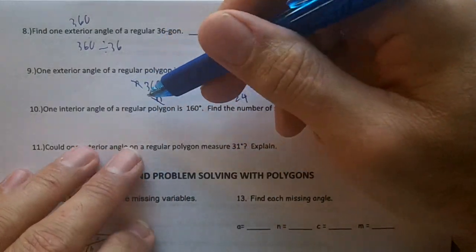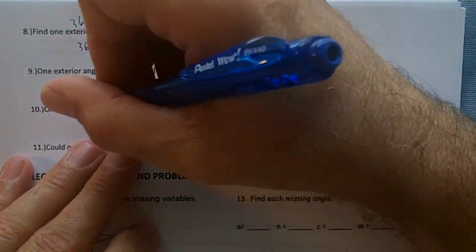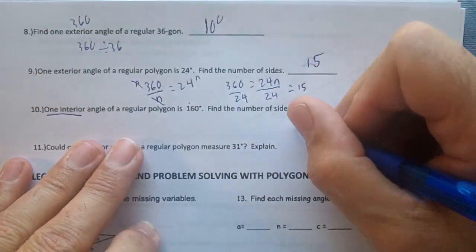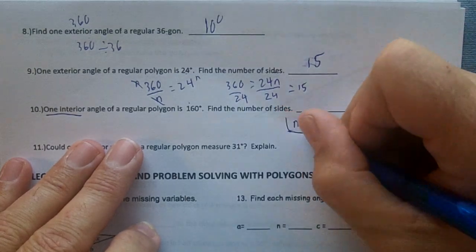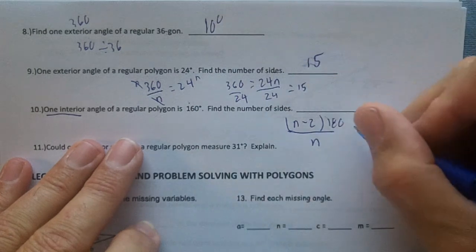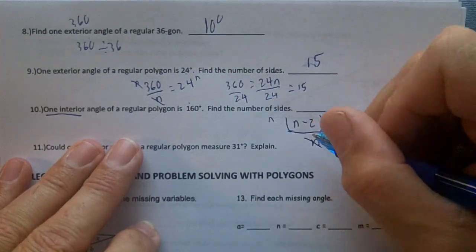One interior angle is 160. Find the number of sides. It's a little bit tricky. So we know one interior angle. To get one interior angle, we use this formula and we know it's equal to 160. I need to multiply both sides by n to get rid of my fraction.